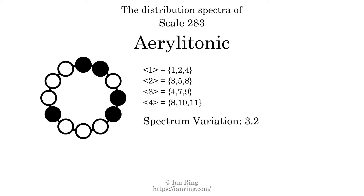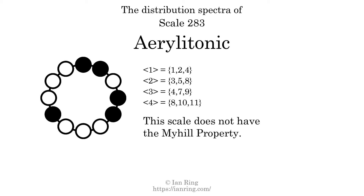The spectrum variation is the sum of all the widths, divided by the number of tones. The spectrum variation of this scale is 3.2. Since the variation is greater than 0, this indicates that the scale is not perfectly even. The highest spectrum width is 5. Since this is greater than 1, we know that this scale is not maximally even. If every spectrum has exactly two specific intervals, we call that the Myhill property. This scale does not have the Myhill property. Since the generic interval ranges overlap, this scale is an improper scale.